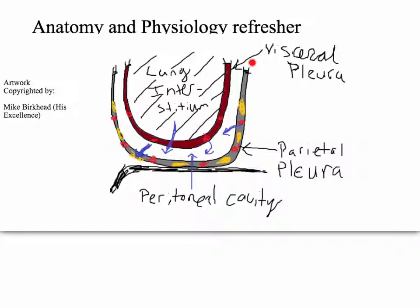With heart failure, not only do the vessels on the parietal pleura increase their hydrostatic pressure, but the vessels on the visceral pleura also increase their hydrostatic pressure. It takes longer for fluid that comes through the visceral pleura to drain over into the lymphatic drainage of the parietal pleura — it makes sense because it's further away and has to pass this gap. Some fluid could also get pushed back into the interstitium of the lung and eventually drain out.